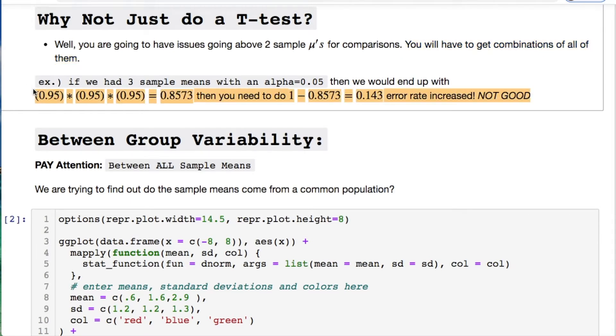Well, if you're going above two means for comparisons, then you have to do a combination setup which will cause you issues. If we had an alpha equals 0.05, our confidence interval would be 0.95. If we had three samples, we have to multiply this times each one of those confidence intervals. Then we would do one minus that which will give us a 14.3 percent error rate which is not good. So it starts compounding.